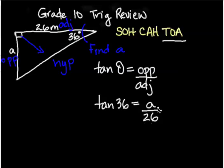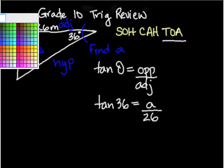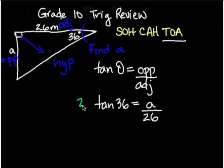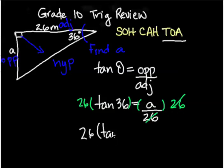I'm going to multiply both sides by 26. That will cancel out the 26 on this side, which leaves me with 26 times tan 36 equals A.